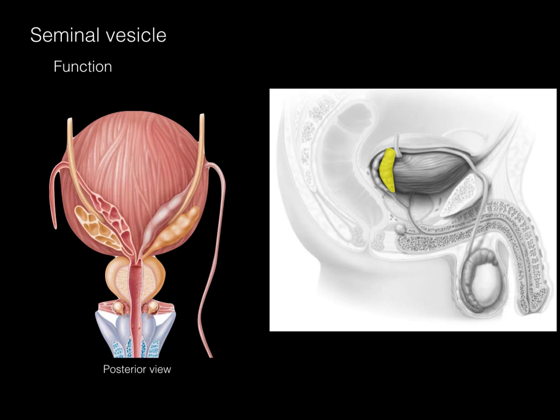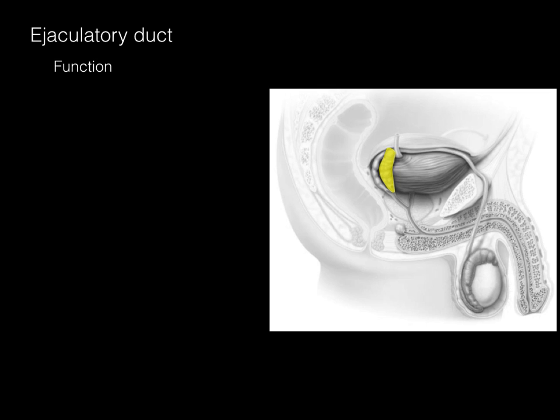In this posterior view of the bladder, we see the ductus deferens coming all the way up, and there is the seminal vesicle paired on either side. The seminal vesicle and the ductus deferens come together to form what's called the ejaculatory duct, shown in green. The ejaculatory duct carries seminal vesicle secretions and sperm from the ductus deferens down through the ejaculatory duct on either side into the urethra.